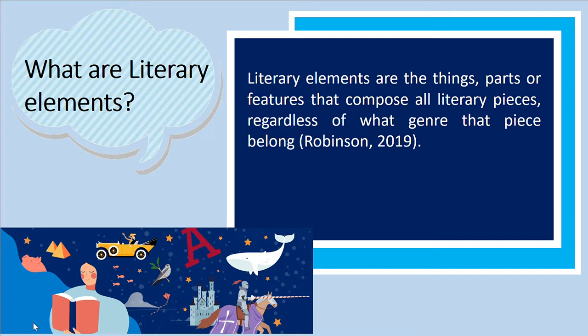There are two types of literary elements: verbal elements and visual elements. Both verbal and visual make up the elements of literature. Verbal views the elements by describing the parts through words, phrases, or points, while visual describes the text through its color, warmness or coldness, texture, and shape.